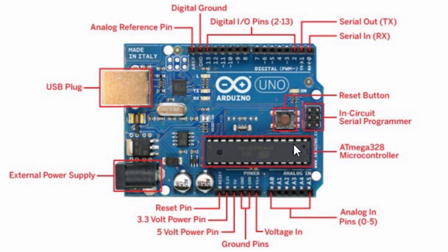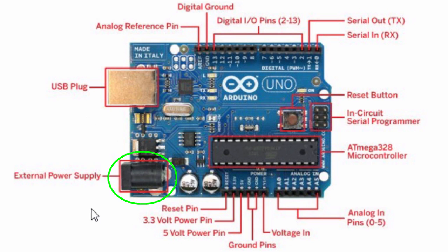The ATmega328 also has 1 kilobyte of EEPROM. The USB plug is used to power the board from your computer's USB port if an external power supply is not used, and also to transfer the program code from your computer into the Arduino. The external power supply can come either from an AC-to-DC adapter or a battery — the adapter can be connected by plugging a 2.1 millimeter center-positive plug into the board's power jack.